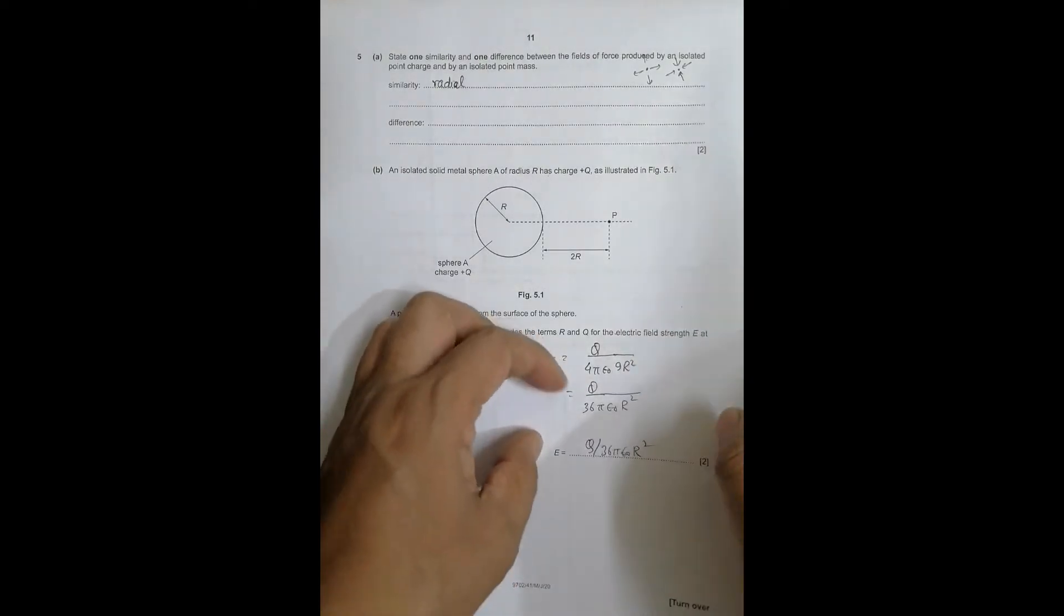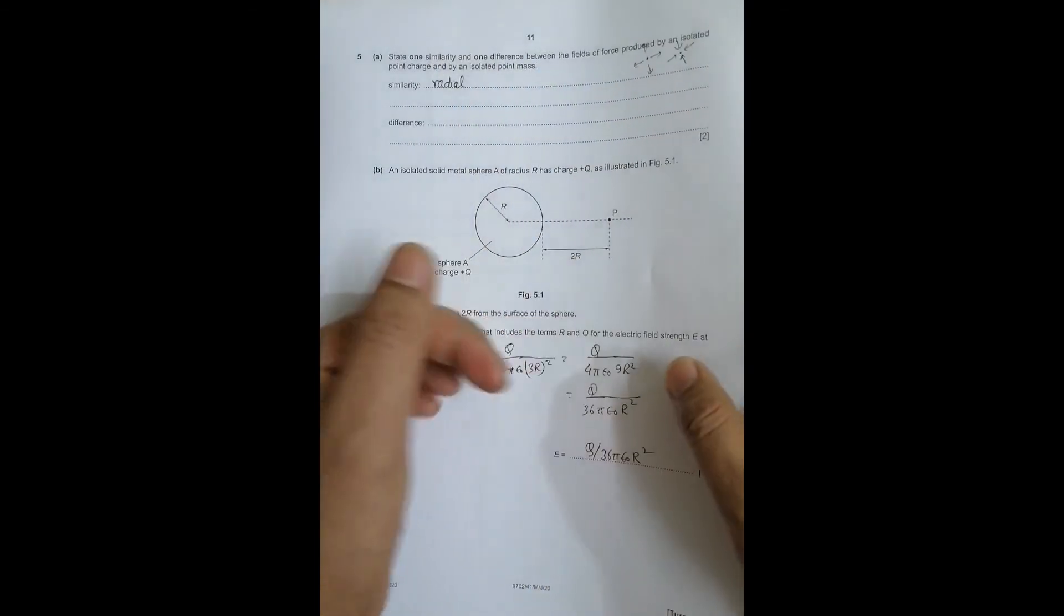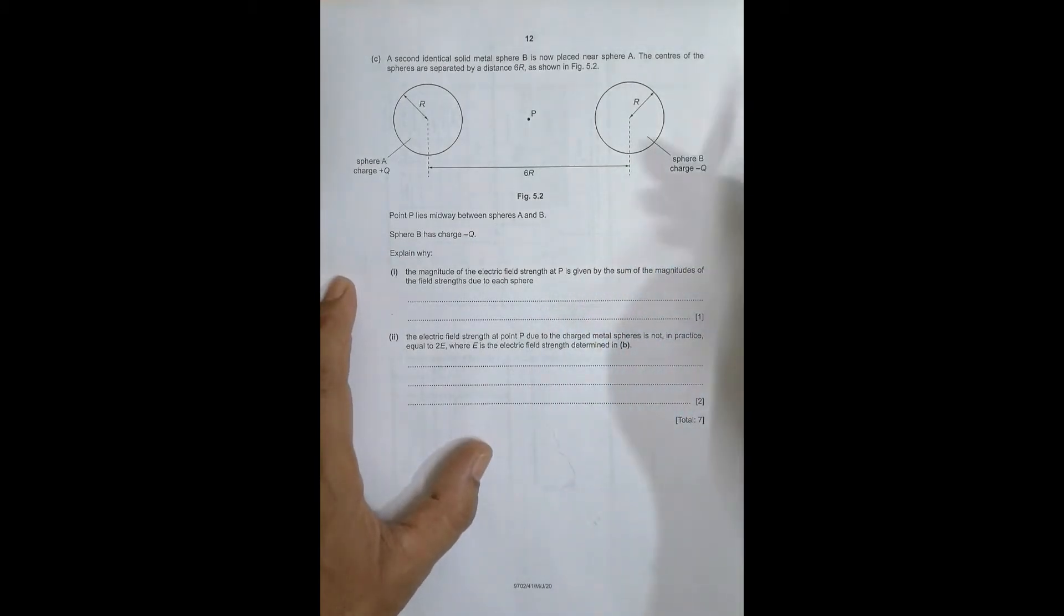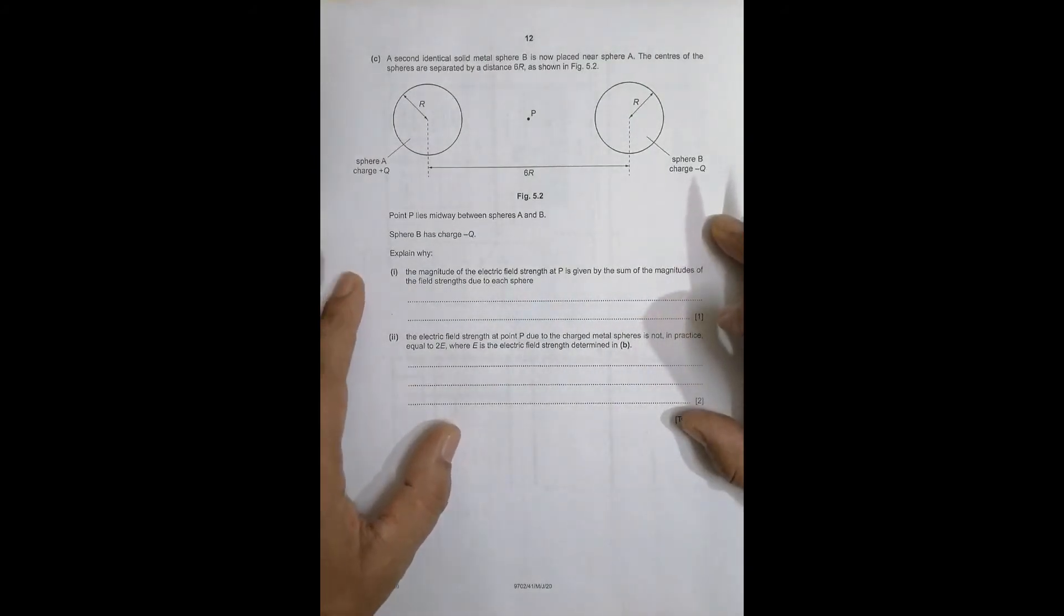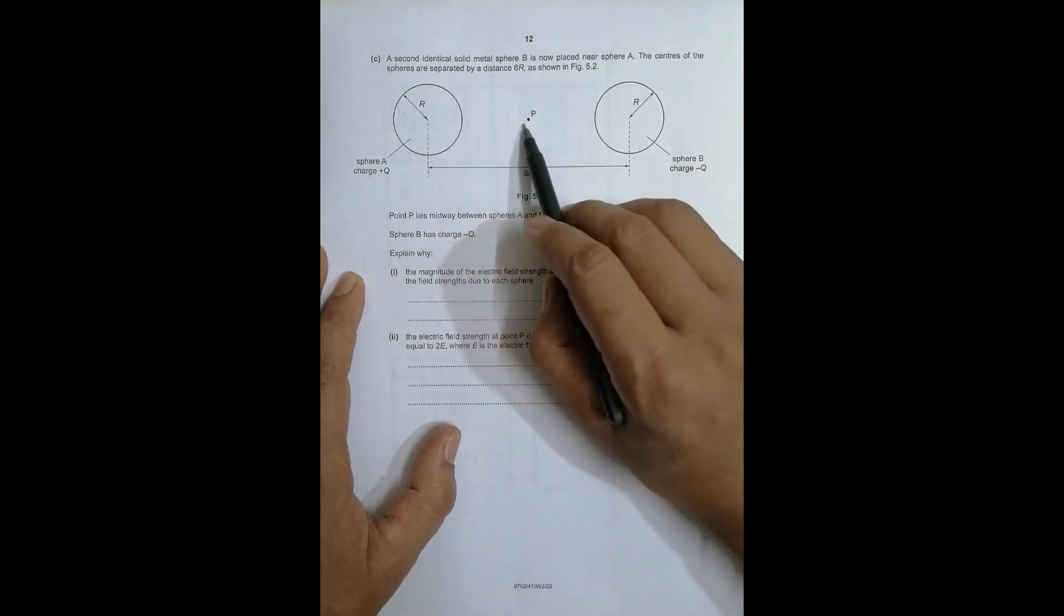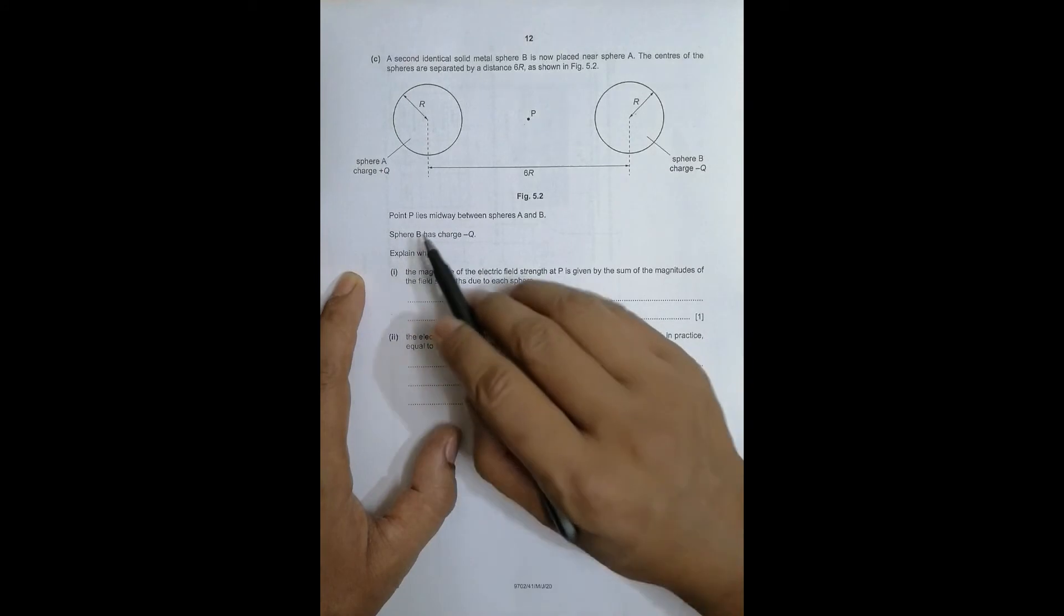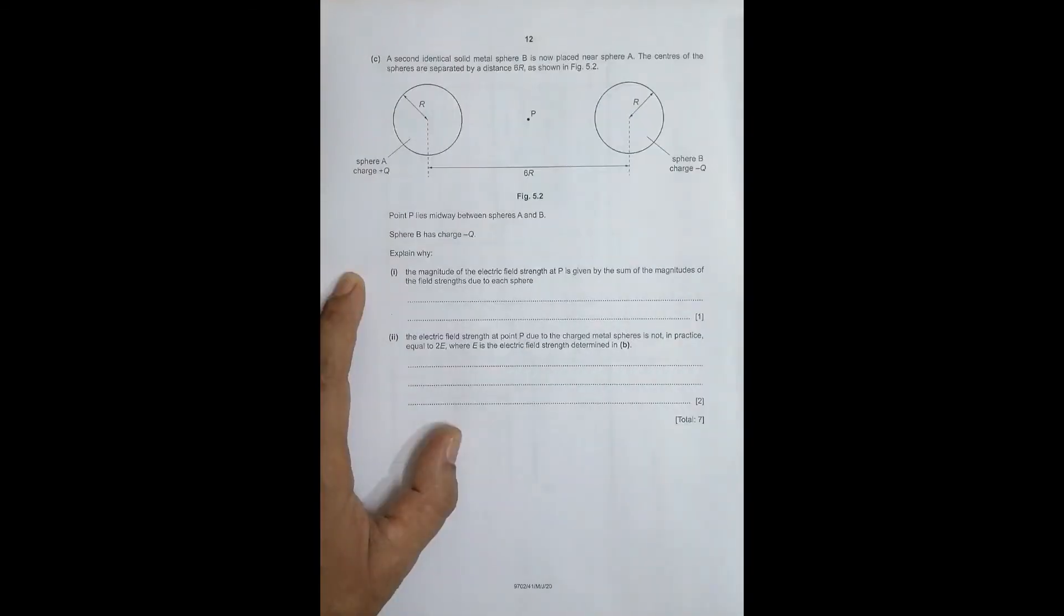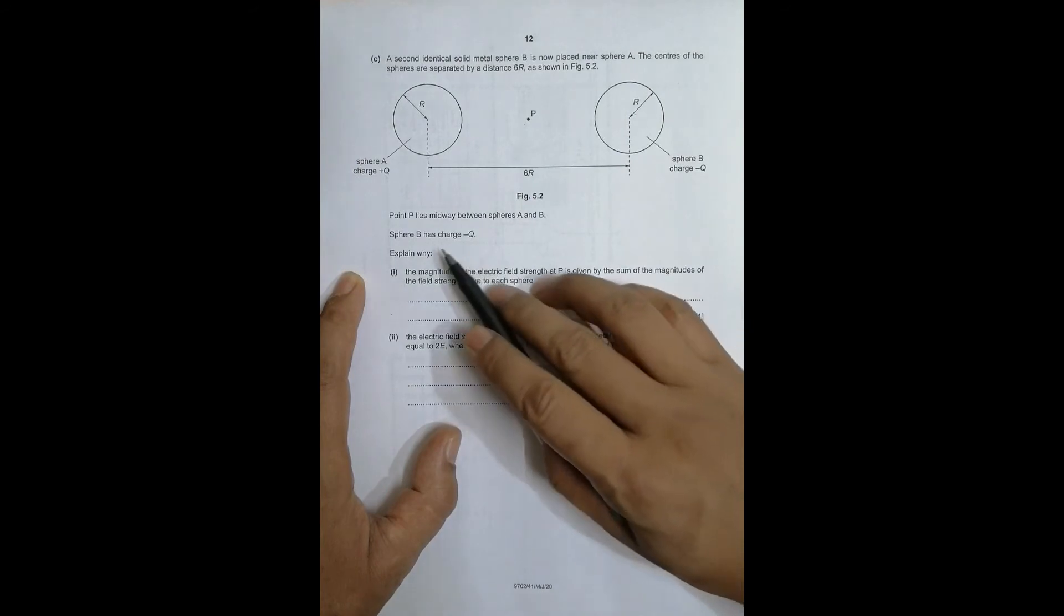Next question: A second identical solid metal sphere B is now placed near sphere A. Previously it was isolated, now it is not because we have a second charged body. The centers of the spheres are separated by distance 6R. Point P lies midway between spheres A and B. Sphere B has charge -Q.